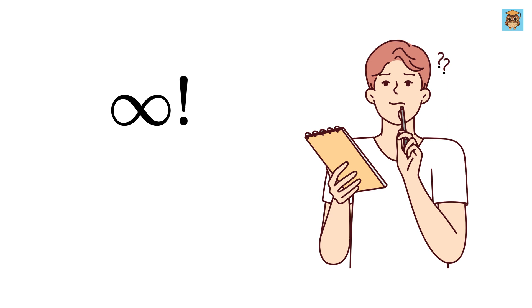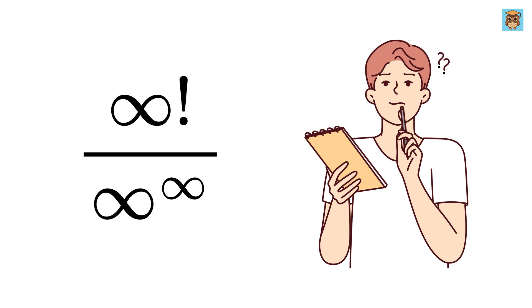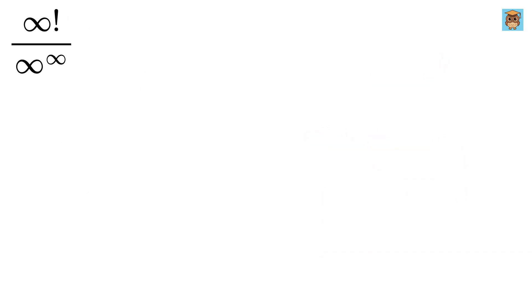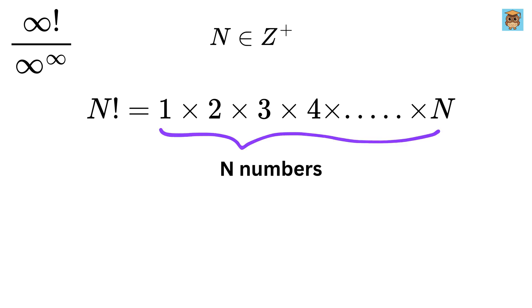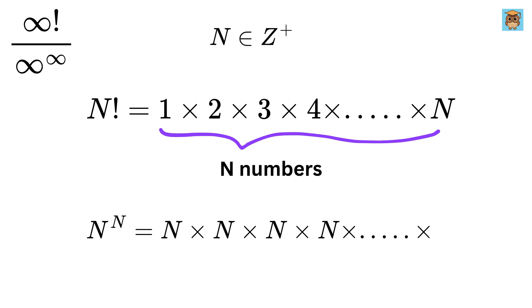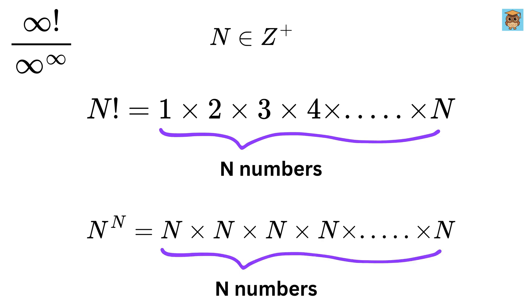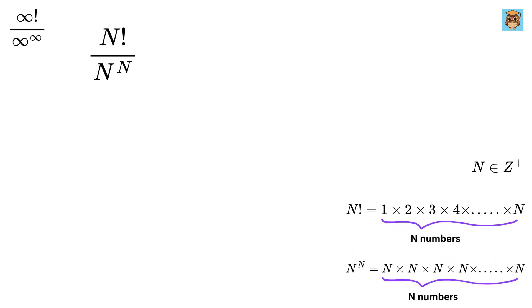What will be the value of infinity factorial divided by infinity raised to the power infinity? For some positive integer n, we can write n factorial as 1 multiplied by 2 multiplied by 3 multiplied by 4 and so on up to n — so these are n numbers. We also write n raised to the power n as n multiplied by n multiplied by n and so on up to n — these are also n numbers. Now let us divide both of them together.